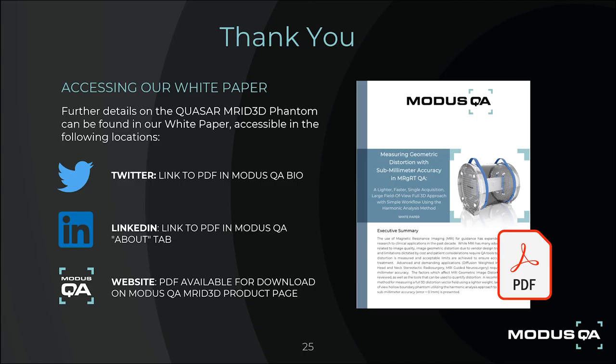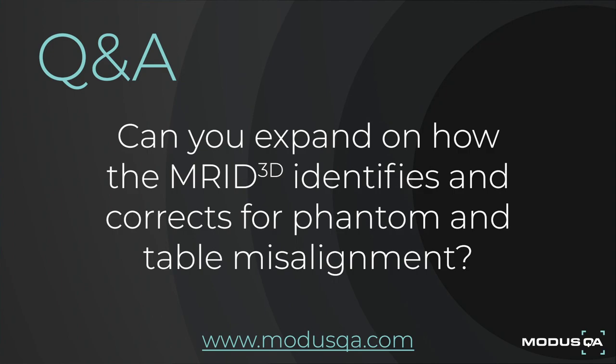Thank you so much, Enzo, for your great presentation. The first question is: can you expand more on how the MRID 3D identifies and corrects for phantom and table misalignment? Is it just the markings on the outside of the phantom? There are several design elements within the phantom that are used for correcting for any misalignments. The phantom has a series of fiducials on the boundary, and we have contrastive boundaries at selected points to act as landmarks for the software to correctly register with the phantom.